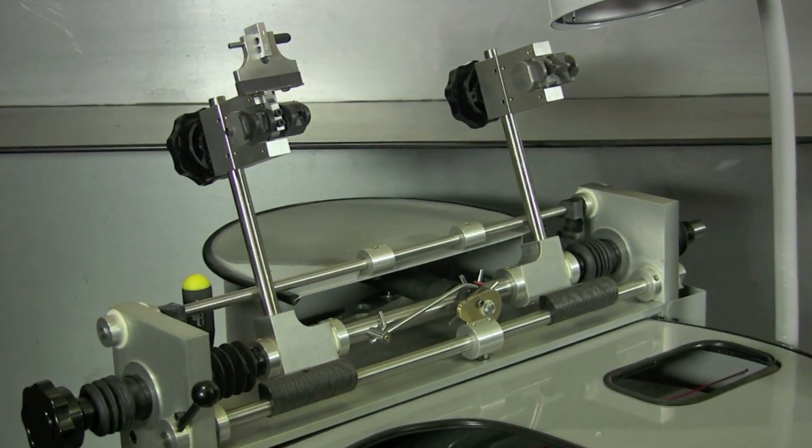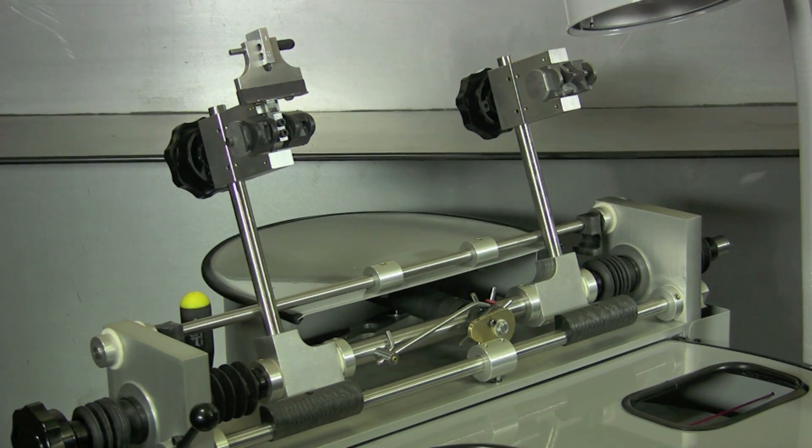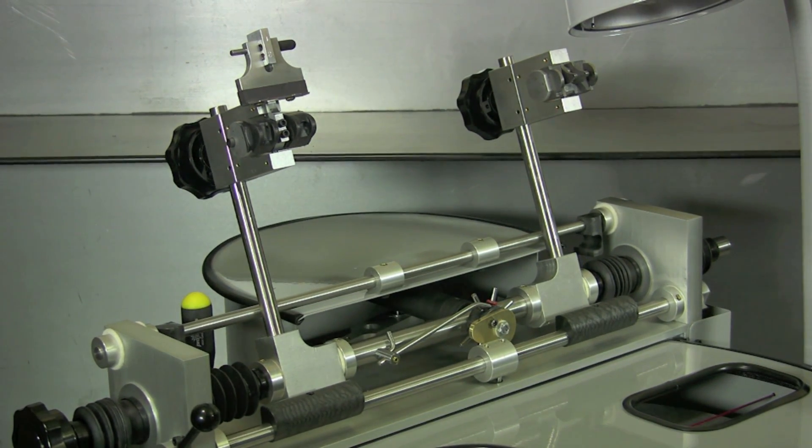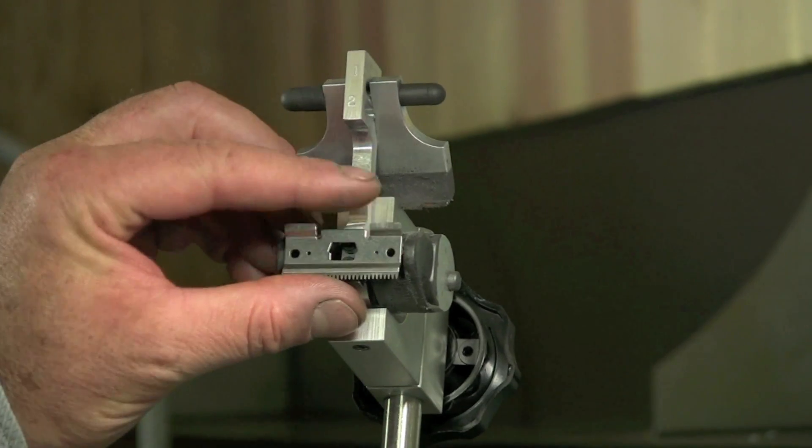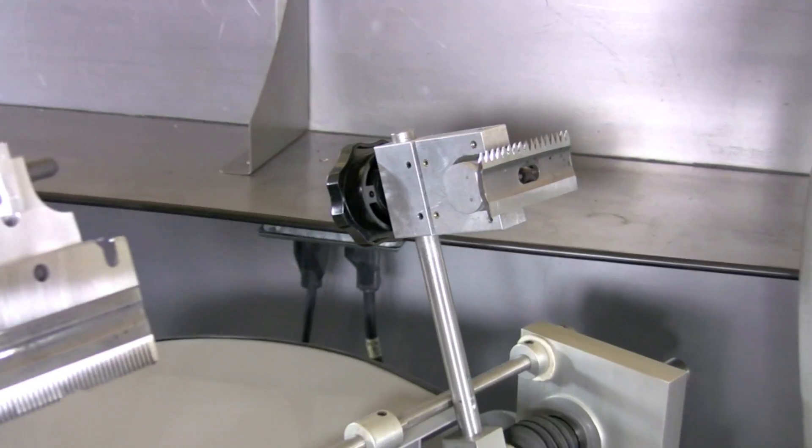The universal magnetic blade holders allow you to sharpen all clipper blades from the small trimmers all the way up through the large animal blades.